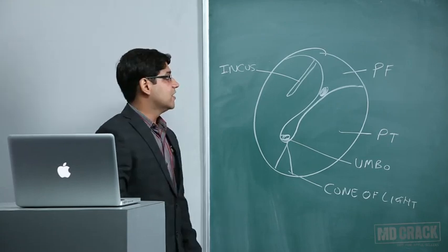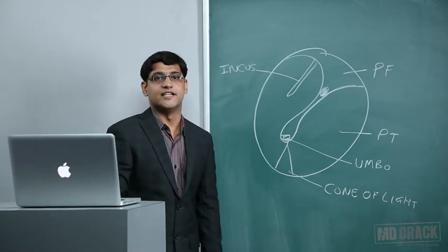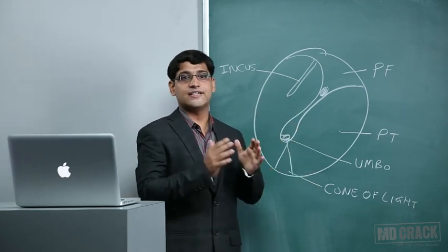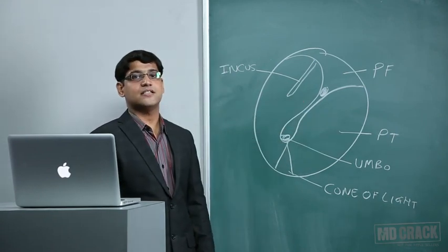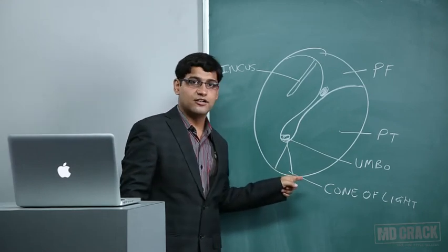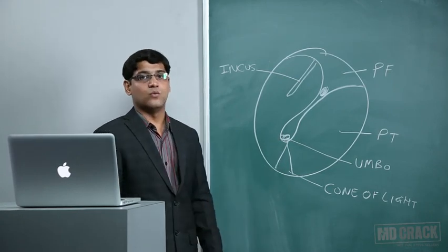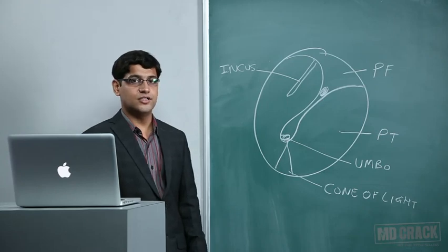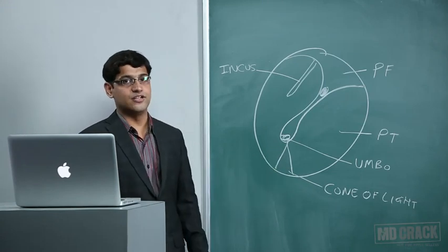The upper part of the tympanic membrane is the pars flaccida, also known as Shrapnell's membrane - it is flaccid because it is not tense. The lower part is the pars tensa. In the antero-inferior quadrant of the tympanic membrane, we can see the cone of light when examining with an otoscope. This is an important landmark - the cone of light is visible in the anterior inferior quadrant.